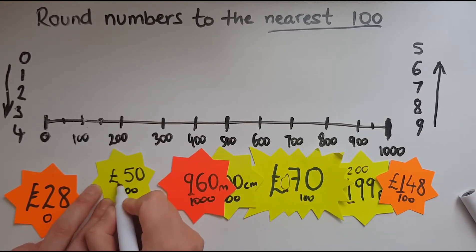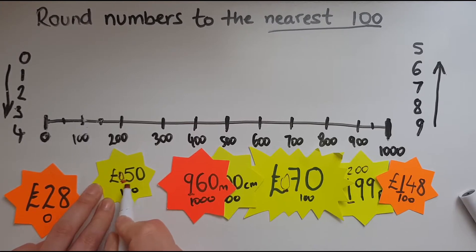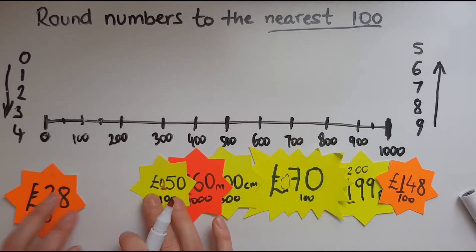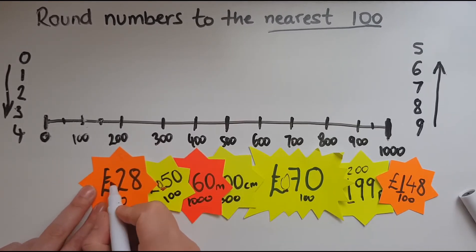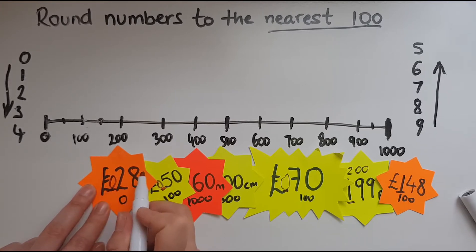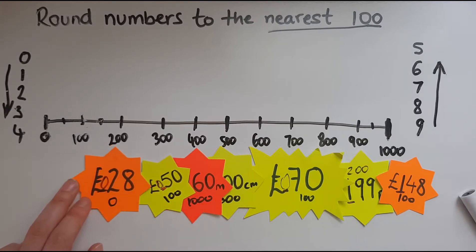For 50, the hundreds digit would be here, but at the moment there is no digit, so it's a zero. Looking to the right, we've got a five, which means we round up — so we go to 100. And finally, we've got 28. Again, no hundreds digit, so it's a zero. Looking at the two to determine whether we stay at zero or go up to 100 — the two means we round down, so we go to zero.